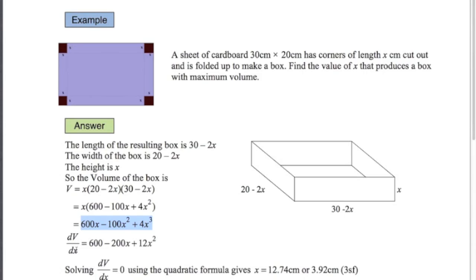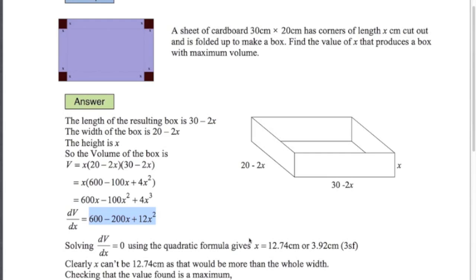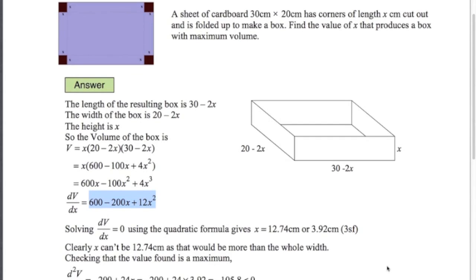We can do the derivative dV/dx — that's easy, we get this expression here. We want to know when that's equal to zero. Solving that equal to zero using the quadratic formula gives us two possible values of x: 12.74 or 3.92. Clearly we can't have 12.74 — if we cut a length of 12 out of each corner, remember this is only 20 centimeters across, we wouldn't have anything left. So we're going to discard that solution — it doesn't make sense in this context.